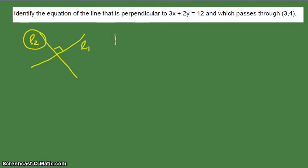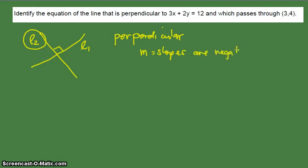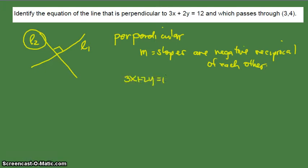The idea will rely on the concept of perpendicular lines. Take note that when two lines are perpendicular, the slopes — the M — the slopes are negative reciprocal of each other. The first line or the given line is 3x plus 2y equals 12, so we need to know what is the slope of this line.